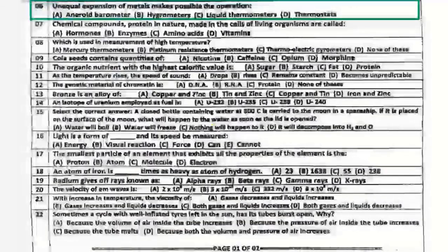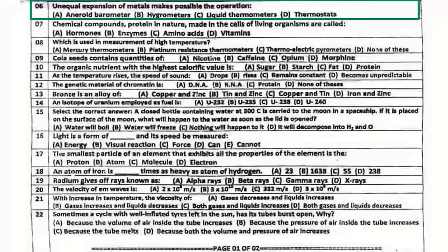Question number 6: Unequal expansion of metals makes possible the operation of which device? The correct answer is the Aneroid Barometer.